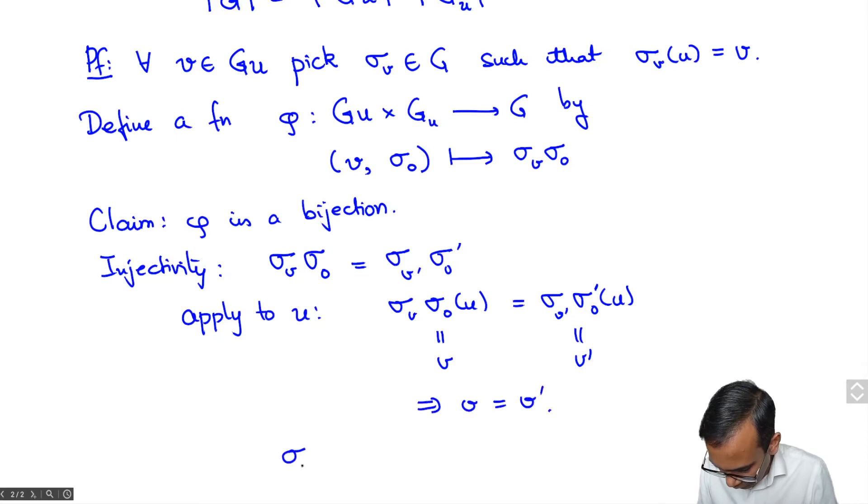So what we know is that sigma V sigma 0 is equal to sigma V sigma 0 prime. But now just by cancellation we get that sigma 0 is equal to sigma 0 prime. So we get that if sigma V sigma 0 is equal to sigma V prime sigma 0 prime then V is equal to V prime and sigma 0 is equal to sigma 0 prime, proving the injectivity of the map phi.